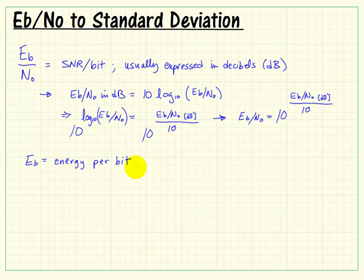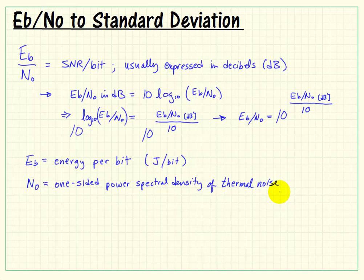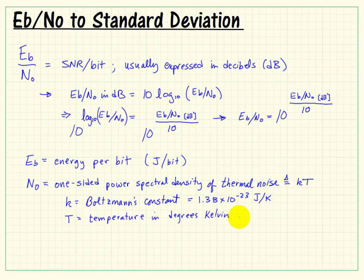Now, eb is the energy per bit, and it has units of joules per bit. And n-sub-zero is the one-sided power spectral density of thermal noise, and it's defined as kT, where k is Boltzmann's constant, and capital T is temperature expressed in degrees Kelvin.